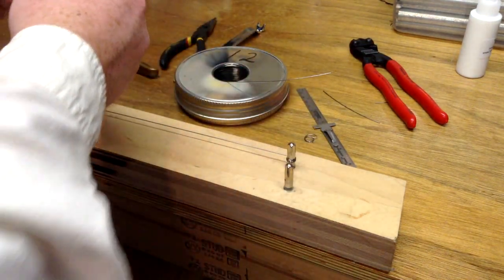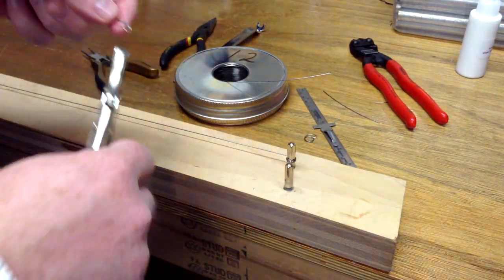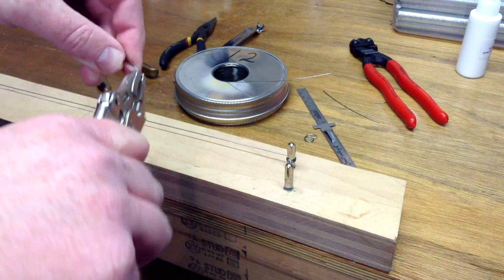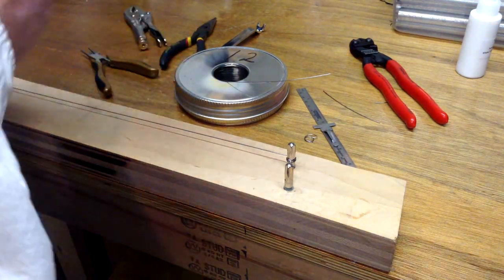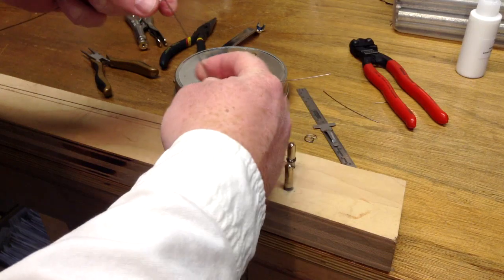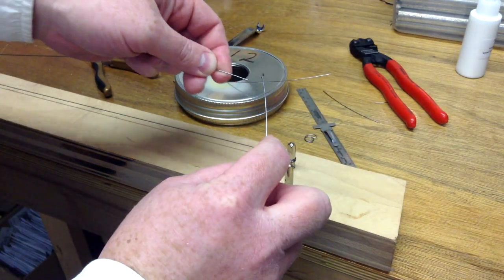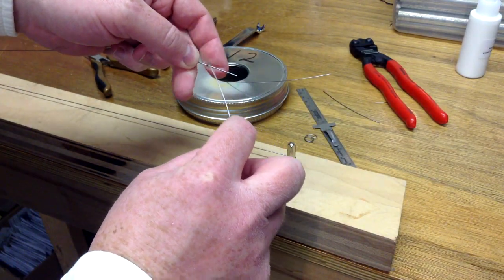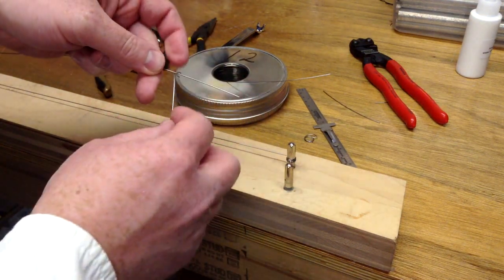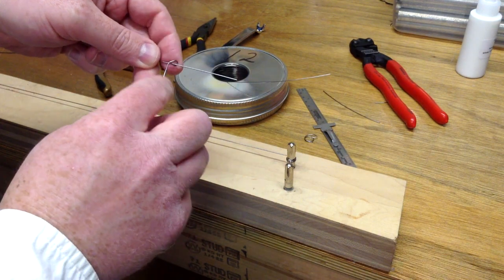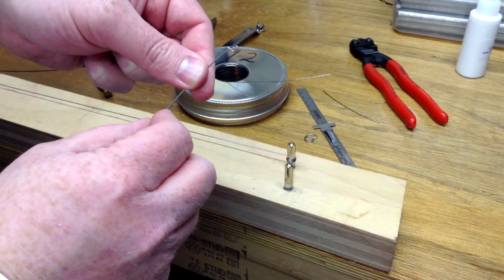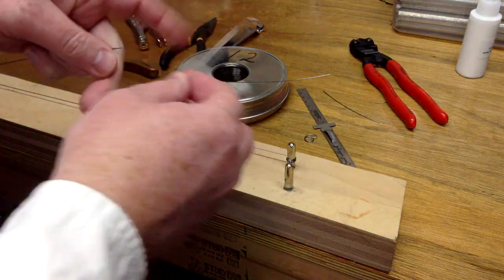Then what I'm going to do is I'm going to take some pliers and just bend that in the direction of the loop. Then I'm going to slip that onto the old string. The loop is going to go right down over the old string like this, with the tail of the string pointed toward the tuning pin.